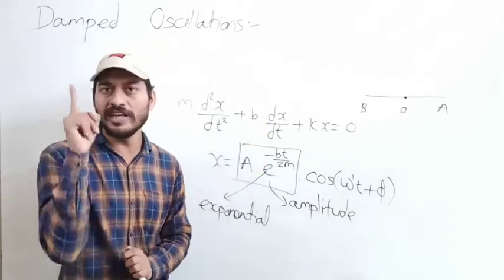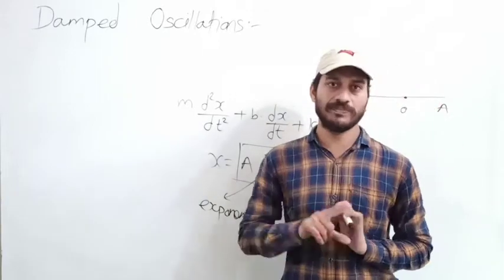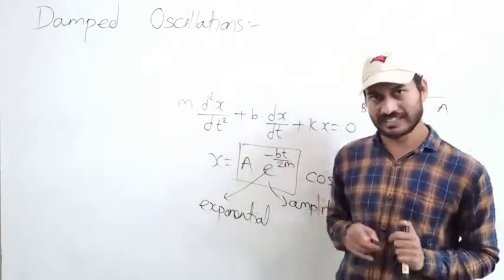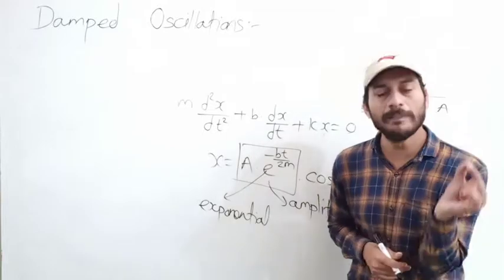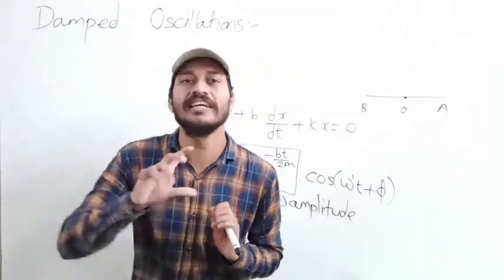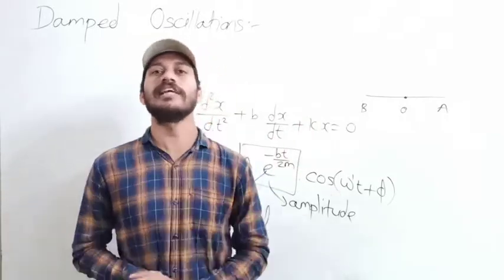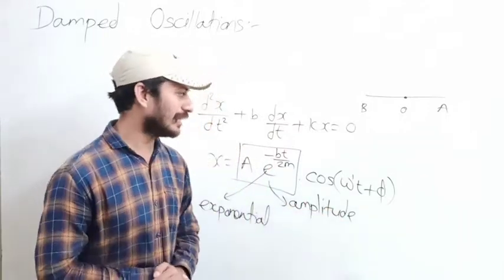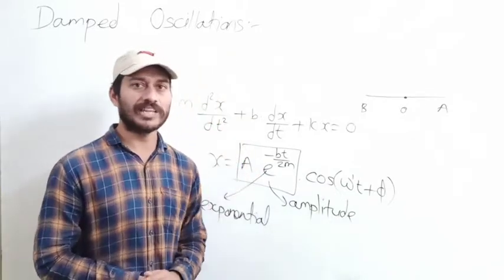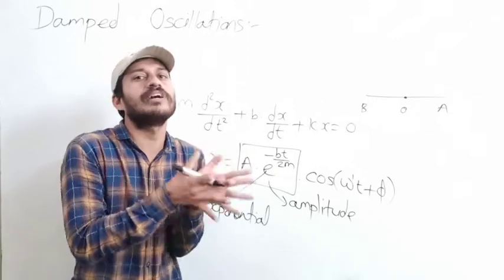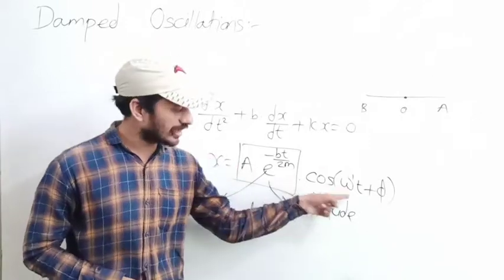As time goes on increasing, amplitude goes on decreasing — suddenly and exponentially. The amplitude decrease is governed by the exponential term. We can analyze this using both analytical methods and graphical representation. This is related to omega dash, the angular frequency of damped oscillation.